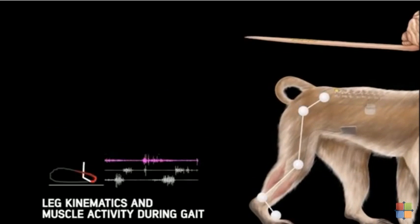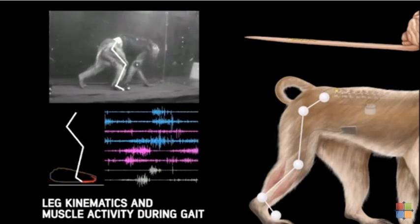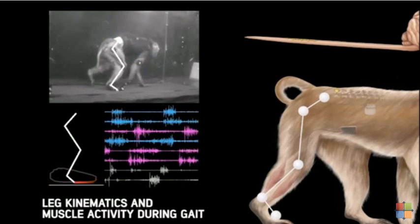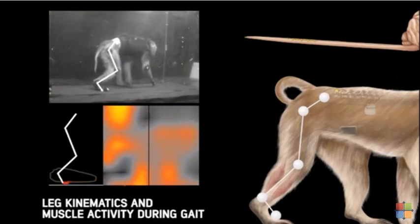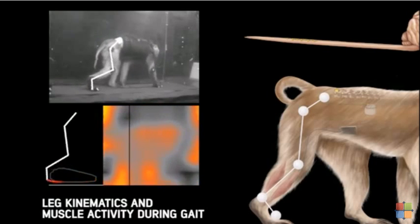We then used wireless technologies to record the activity of these leg muscles in conjunction with leg kinematics, which allowed us to reconstruct the spatiotemporal map of motor neuron activation during locomotion.